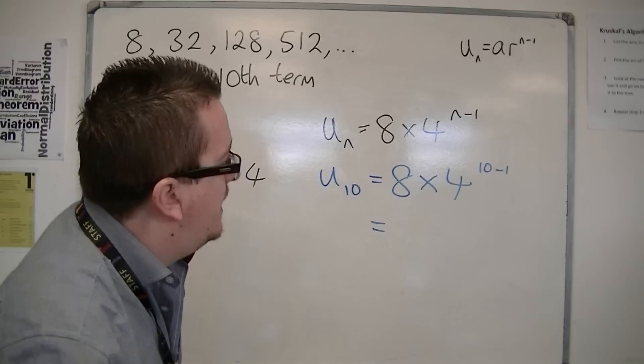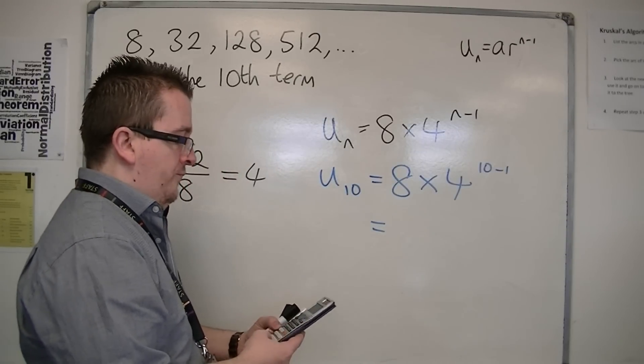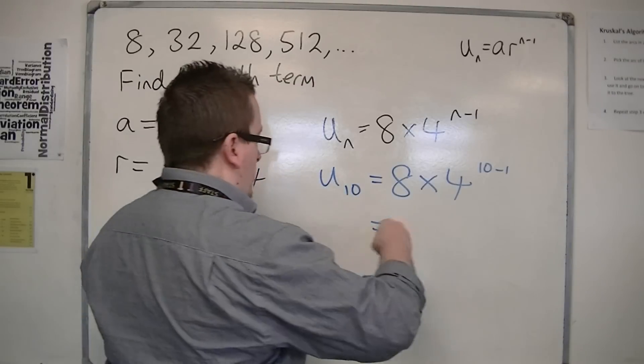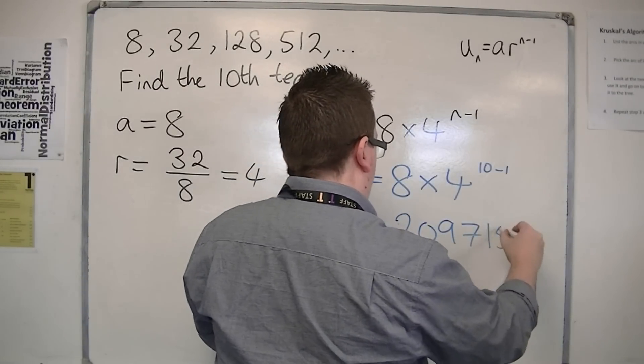And I pop that into my calculator. 8 times 4 to the 9, which is quite a large number: 2, 0, 9, 7, 1, 5, 2.